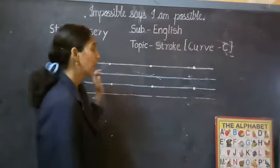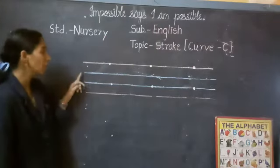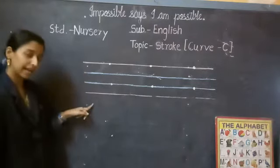Look here, how to write right curve stroke. In your notebook there are four lines: red line, first blue line, second blue line, red line.